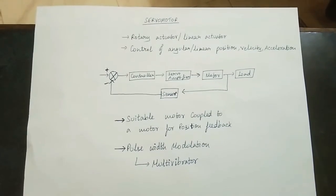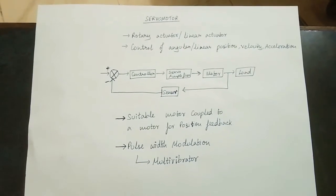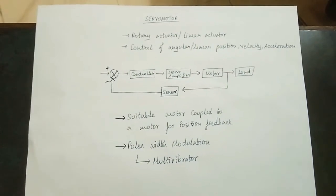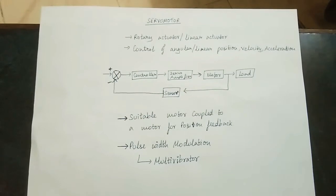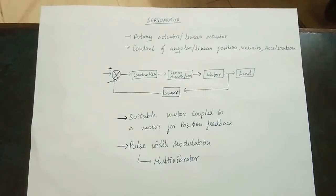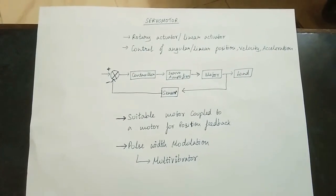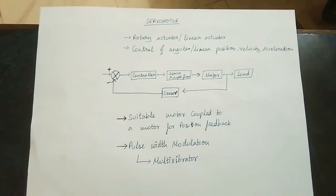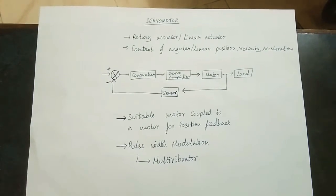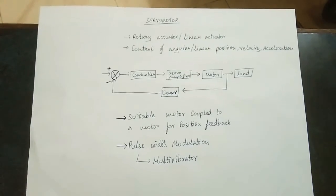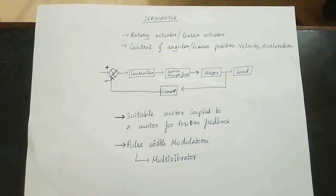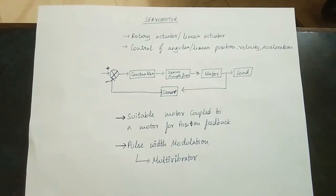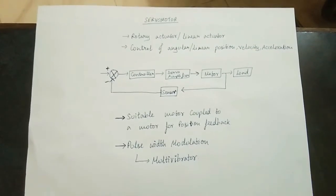A servo motor is a rotary actuator or a linear actuator. We will talk about rotational motion or linear motion — an indirect motion in the linear motion. The servo motor and servo actuator are similar.